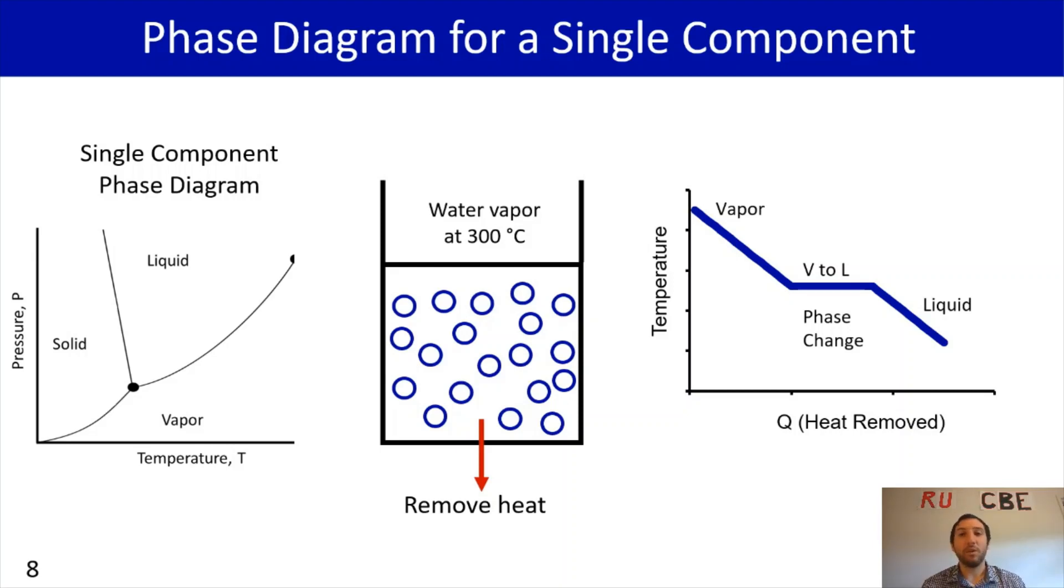And as you may remember during that phase transition, there's no change in temperature because all the energy is just going into changing your state, going from a vapor to a liquid. And after you finish doing that phase transition, you will then resume decreasing temperature because you're now all in one state, at this point being a liquid state. And that's the curve that I'm sure you're pretty familiar with. You've commonly seen when you have one component.